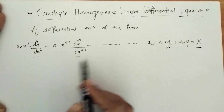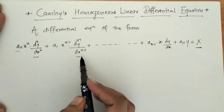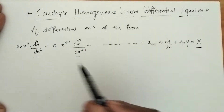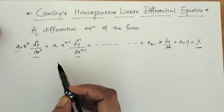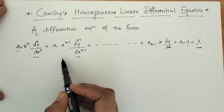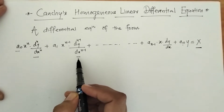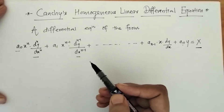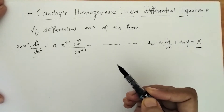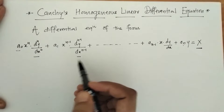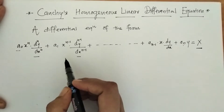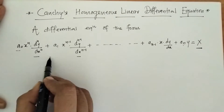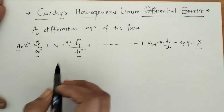So yes, this differential equation is Cauchy's homogeneous linear differential equation, and we have to find its solution by reducing this differential equation to one with constant coefficients. Let's proceed for finding the solution. For this, first we will write this differential equation in operator form.